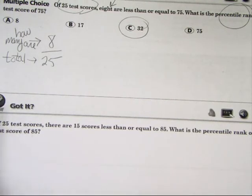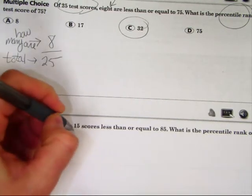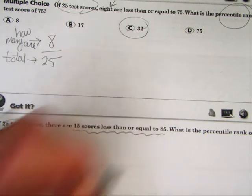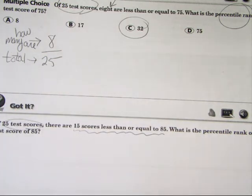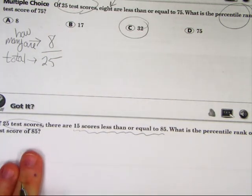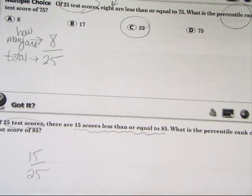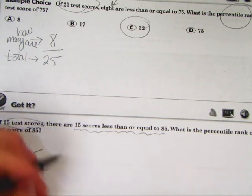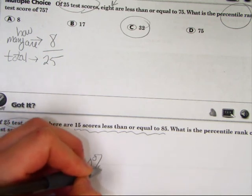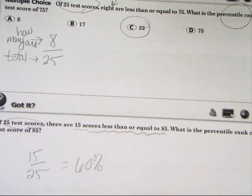Okay, but Got It. Not too hard, right? Just had to divide. Of 25 test scores, 15 are less than or equal to 85. What is the percentile rank of 85? So we just do 15 over 25 and we get 60%. And that's all you have to do for percentile rank.